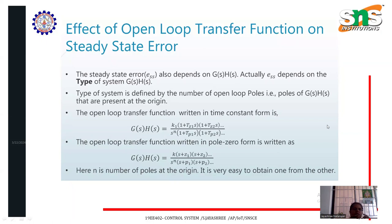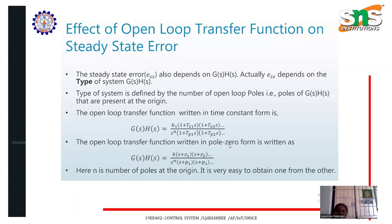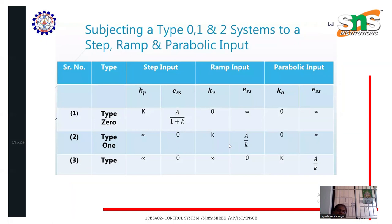We will continue with the previous class. We discussed steady-state error and error for various types of inputs. We also discussed poles and zeros, and type number — which denotes the number of poles at the origin of the open-loop system. We then looked at the position error constant, velocity error constant, and acceleration error constant for step, ramp, and parabolic inputs.